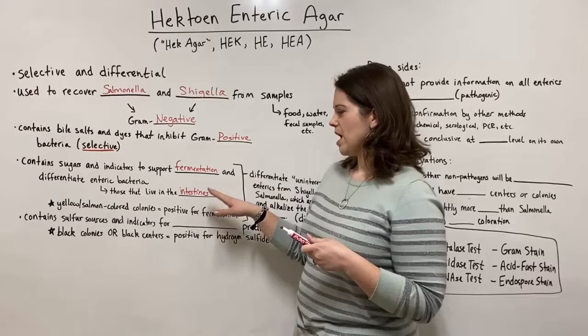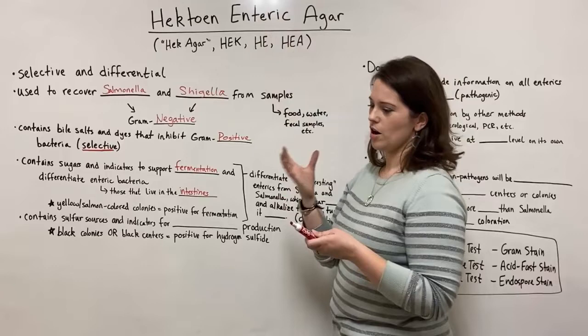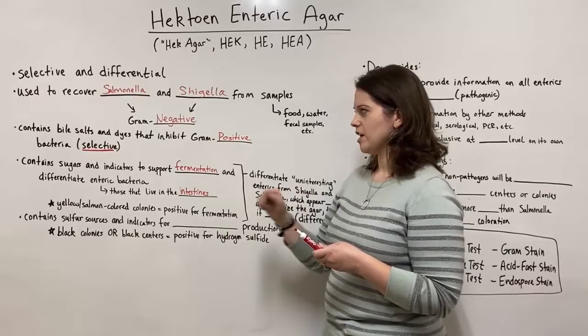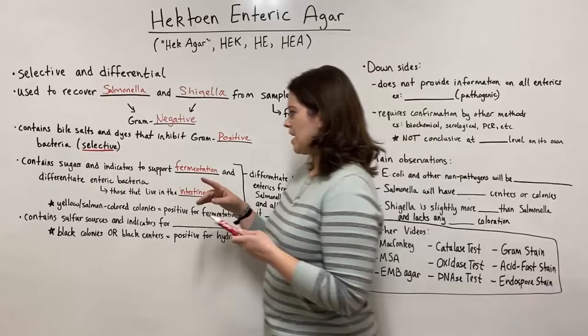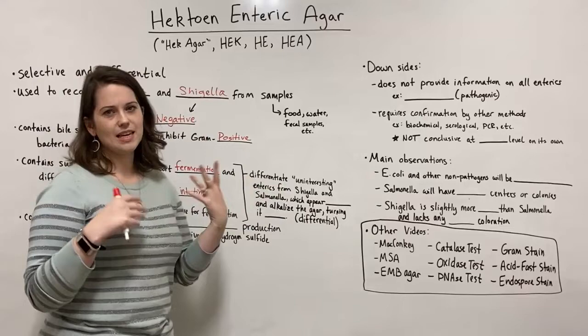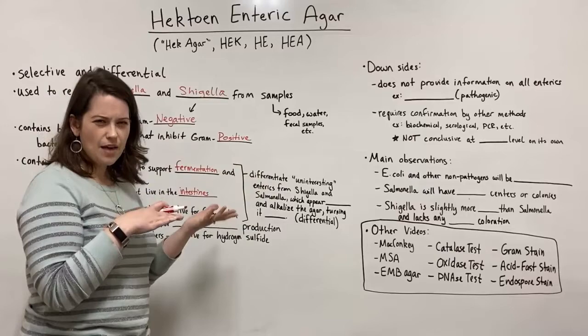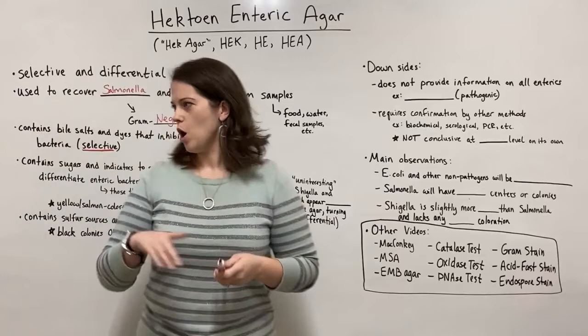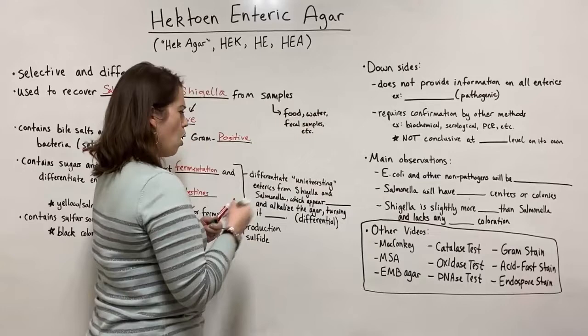Now this is important: if a person takes one of these samples, places it on HEC agar, and sees salmon-colored colonies indicating fermentation of these sugars, that is actually expected from an intestinal sample. This allows differentiation between what we would consider uninteresting enterics — things like E. coli that's present in the guts of many people and is often not pathogenic — and Shigella and Salmonella. Because Shigella and Salmonella will not ferment these sugars, they will not create salmon-colored colonies.